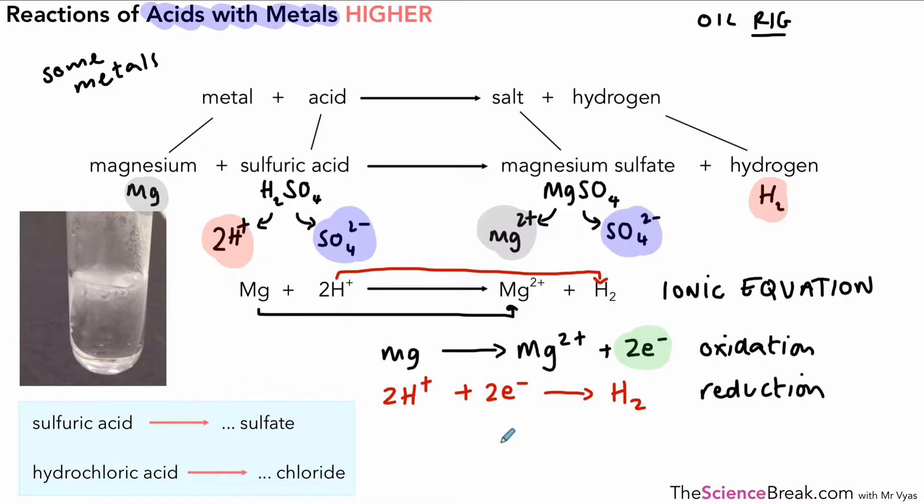And as you can see, these two happen at the same time in this reaction. Oxidation and reduction happen at the same time, so we call this a special type of reaction called a redox reaction, because we've got reduction happening and oxidation happening both at the same time.